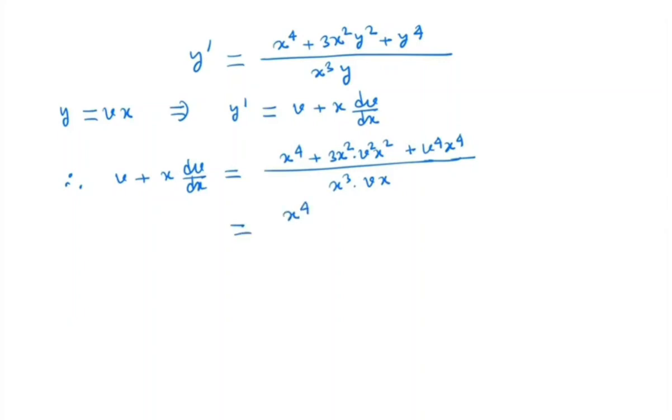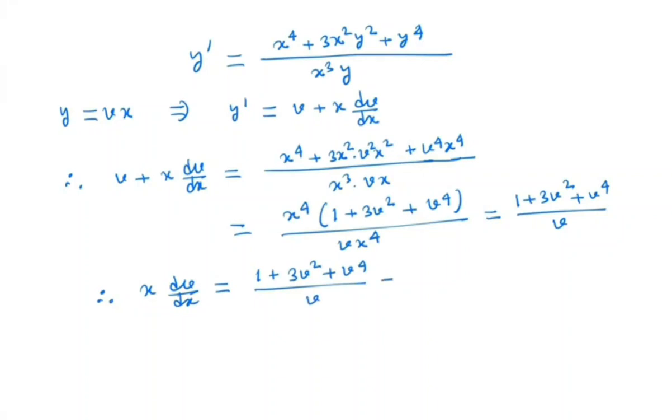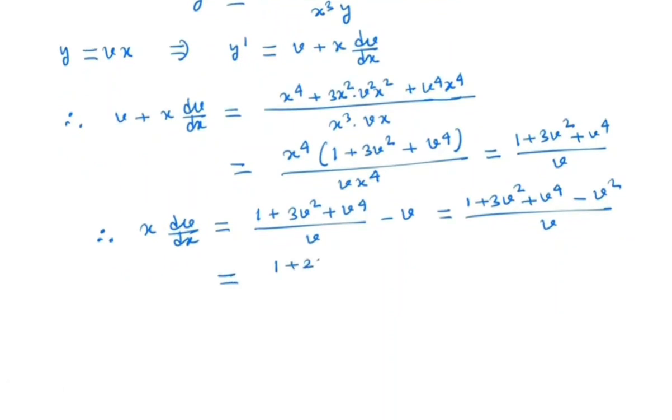So, we have x⁴ times 1 plus 3v² plus v⁴. And the denominator, we have vx⁴. So, we have 1 plus 3v² plus v⁴ by v. If we again simplify this equation, we have x dv/dx is equal to 1 plus 3v² plus v⁴ by v minus v. So, we have 1 plus 3v² plus v⁴ minus v² by v, which is 1 plus 2v² plus v⁴ by v.